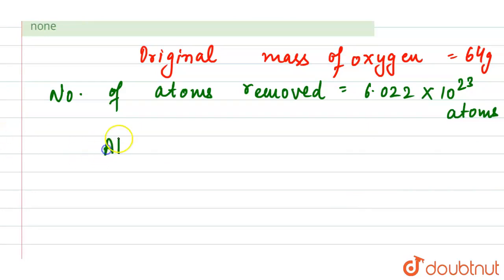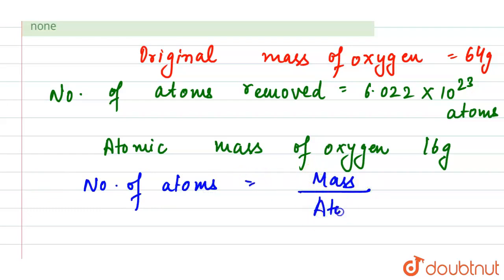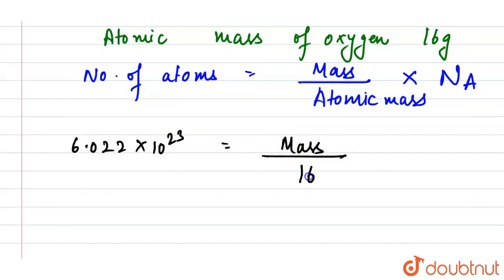We know that the atomic mass of oxygen is 16 grams. We will use the formula: number of atoms = (mass / atomic mass) × Avogadro's number. The number of atoms is given as 6.022 × 10²³, atomic mass is 16 grams, and Avogadro's number is 6.022 × 10²³.